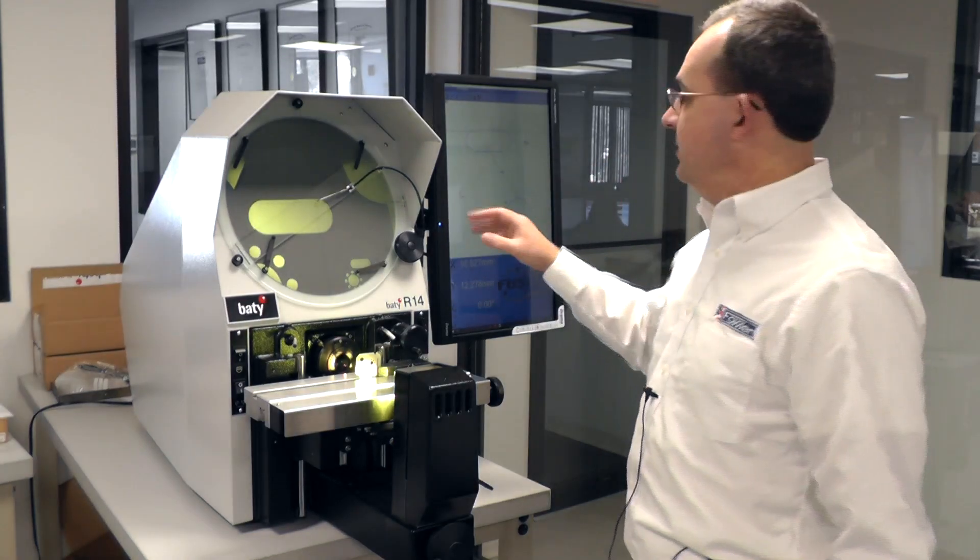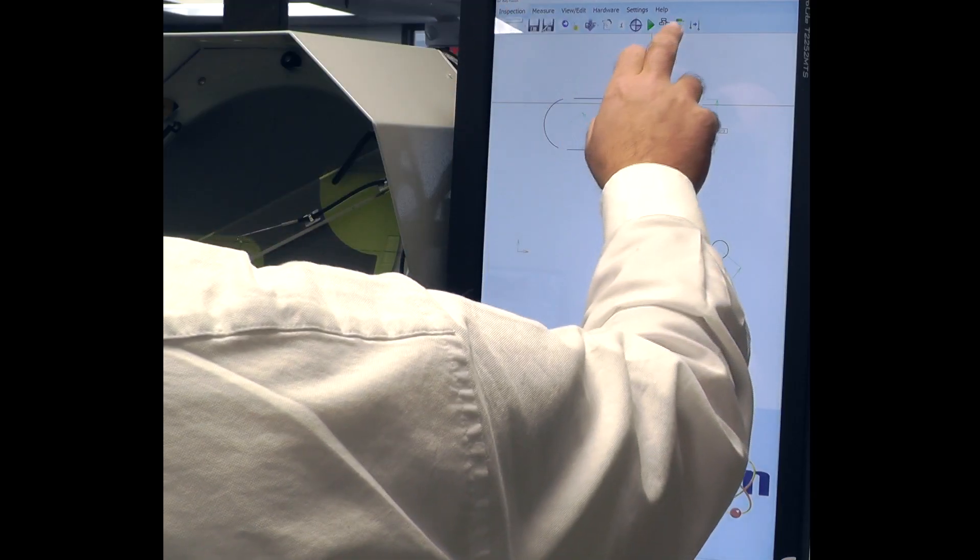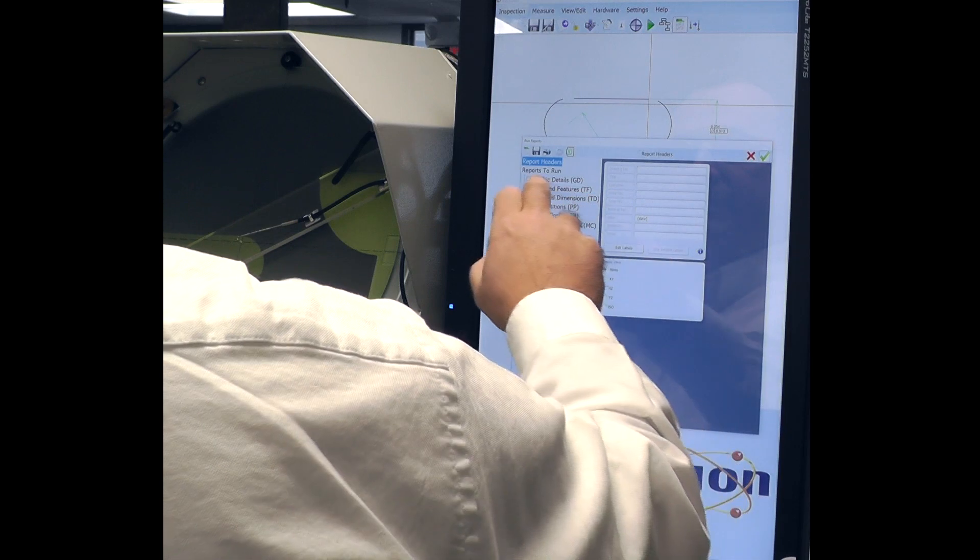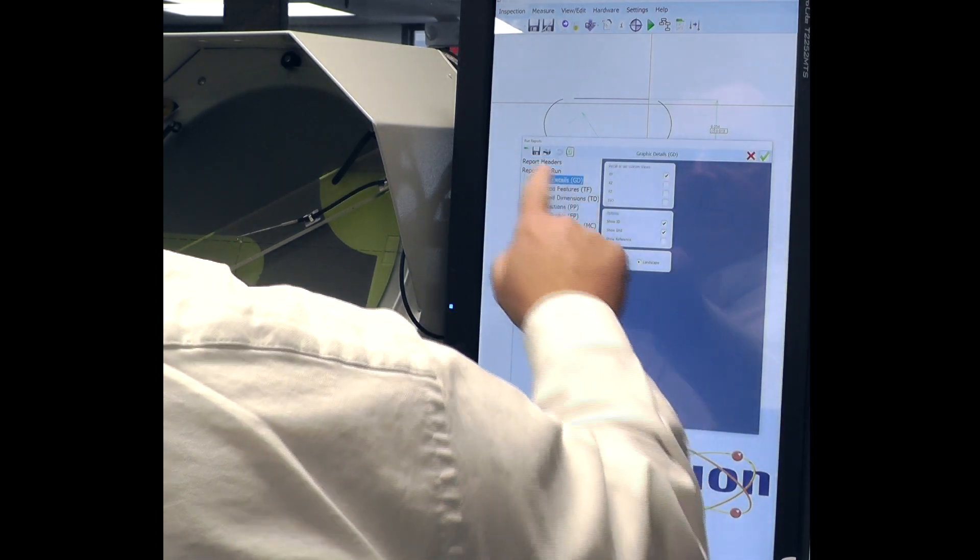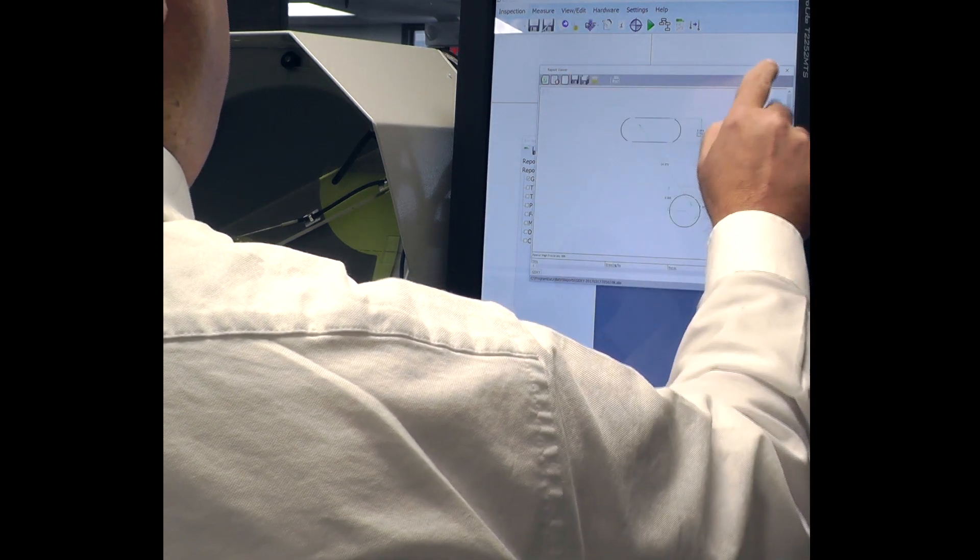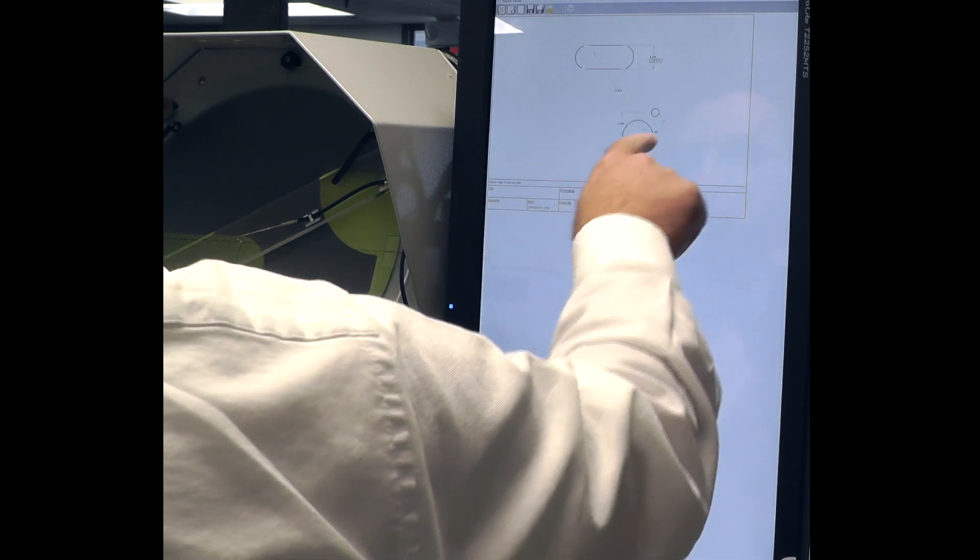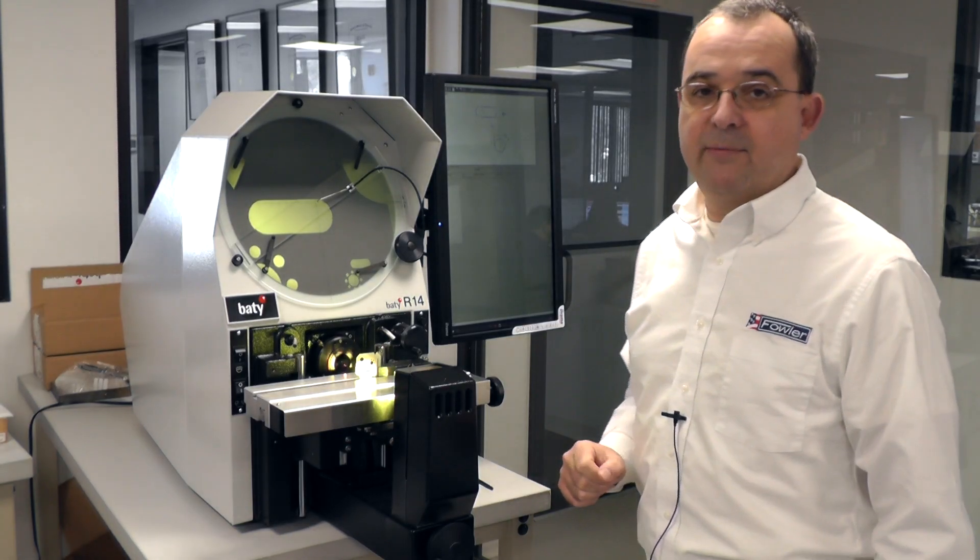We've done some just basic inspection here. Nothing too fancy. And we can easily generate a report. I'm going to create a graphic report. And I'm going to run it. And we get a full-blown report with the features that we've measured and the data that we derive from those measured features.